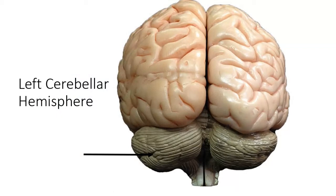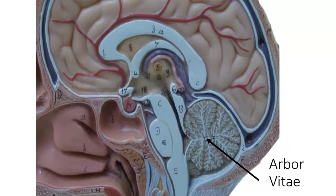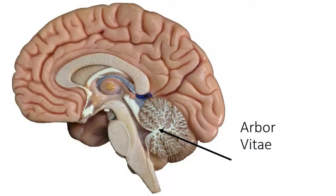This next view is what we call a mid-sagittal view. We're going to cut the brain in equal halves right down the middle and look at it from the inside. Where that arrow is pointing, that's white tissue called the arbor vitae — we're looking in the middle of the vermis. That white matter is the arbor vitae. Arbor means tree, vitae means life.